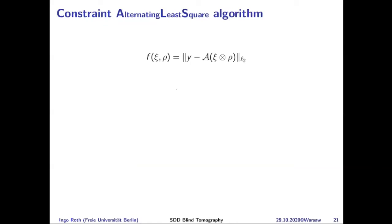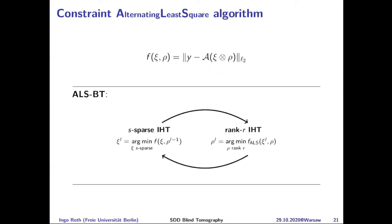An alternative heuristic approach is the Alternating Least Squares (ALS) algorithm: fix C and optimize over ρ, then fix ρ and optimize over C, alternating while enforcing sparsity and low-rank structure. This is much faster in practice but has no proven recovery guarantees. It's a heuristic that can handle the same problem.